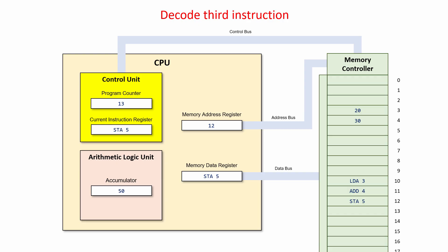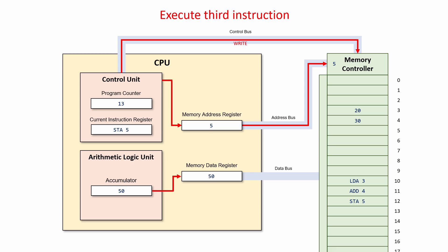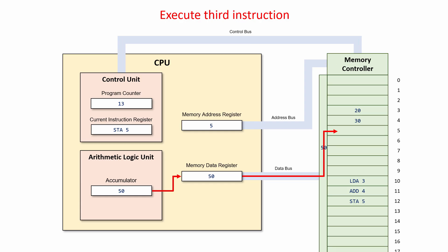The store instruction is slightly different from the previous instructions. This time, the CPU is going to write something to the memory rather than read something. The instruction says: store a copy of whatever's in the accumulator into memory address number 5. We're going to access a memory location, so as before, the memory address has to be put into the memory address register and sent to the memory controller via the address bus. To execute this instruction, the contents of the accumulator are copied to the memory data register — anything moving in or out of the CPU has to go through the memory data register. A write instruction is then issued by the control unit and the data is copied via the data bus into memory location 5. And that's the program completed, or at least this very small fragment of it.